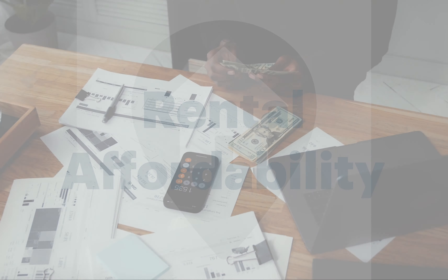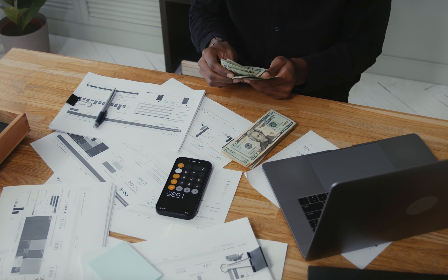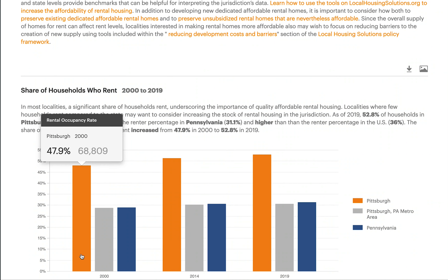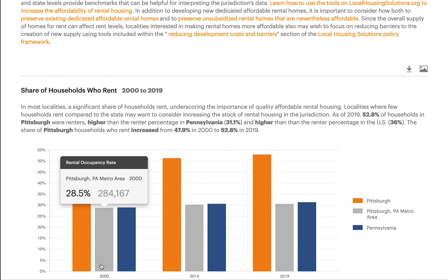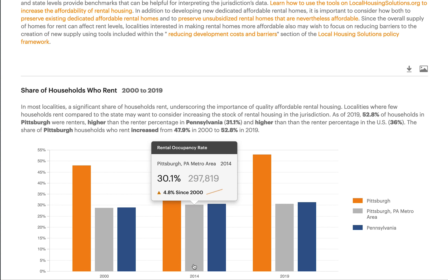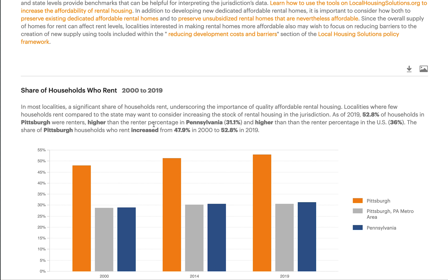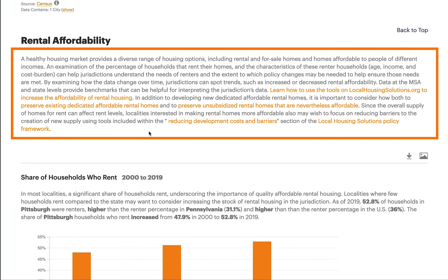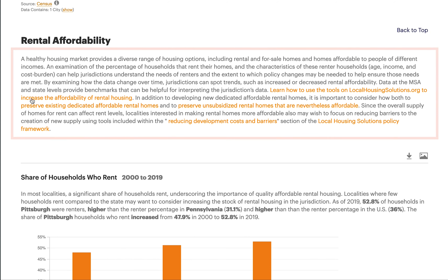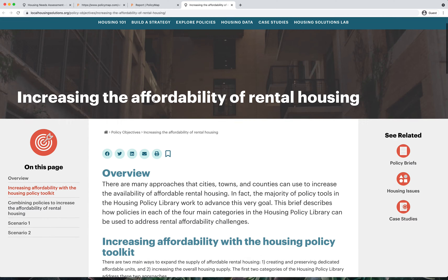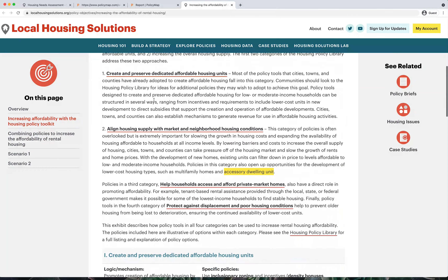The rental costs and affordability section addresses: how significant is the affordability problem for renters in my locality, and is it getting better or worse? In addition to providing interactive downloadable visualizations, each section provides comparison points for the same measures at the state and national level, along with a brief description of trends and links to relevant policy guidance and other useful tools on Local Housing Solutions.